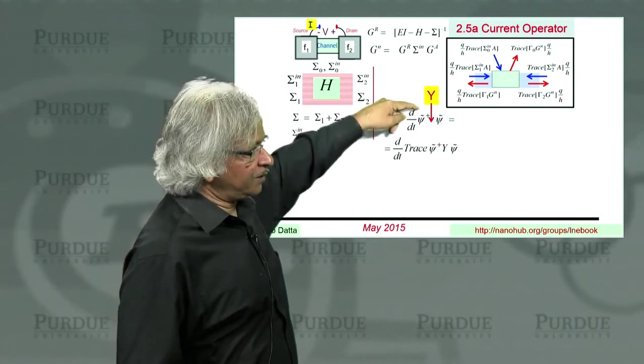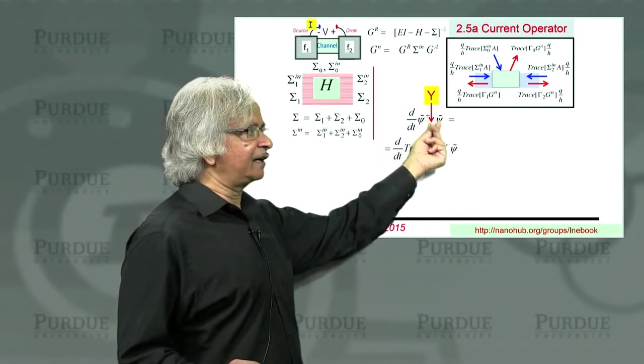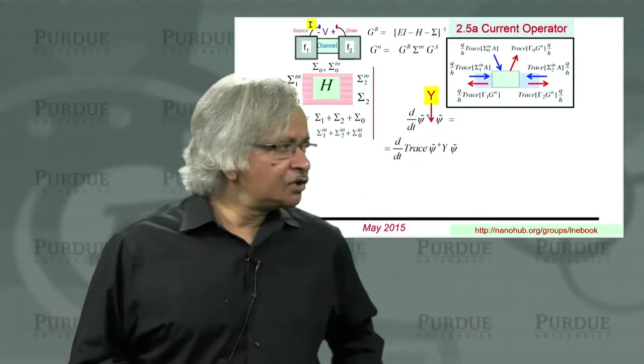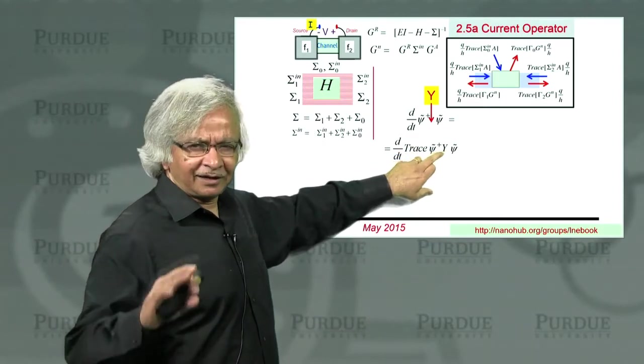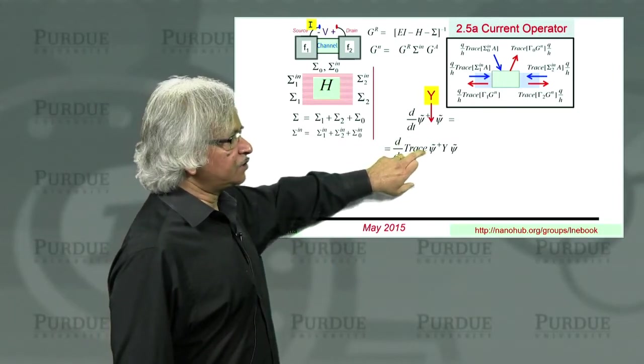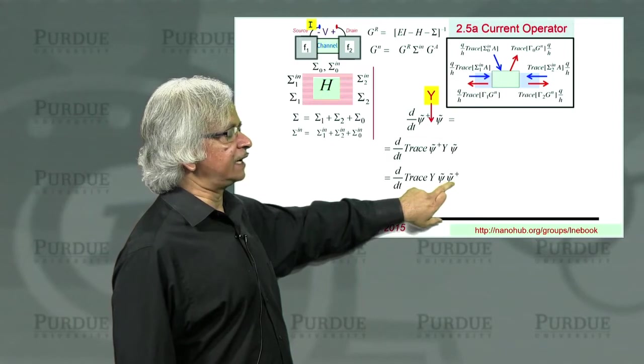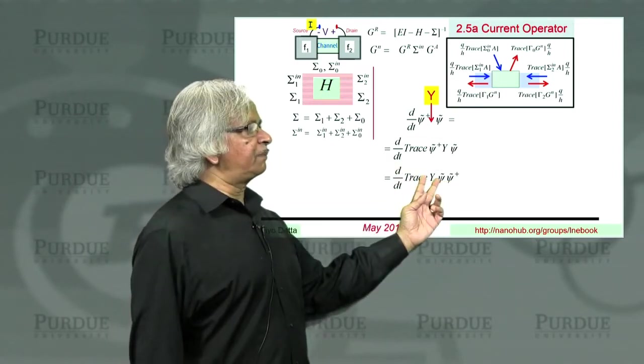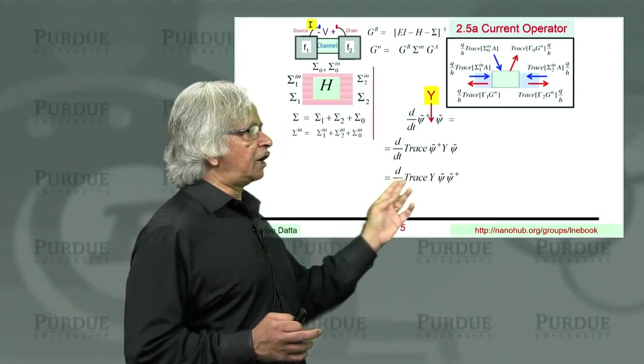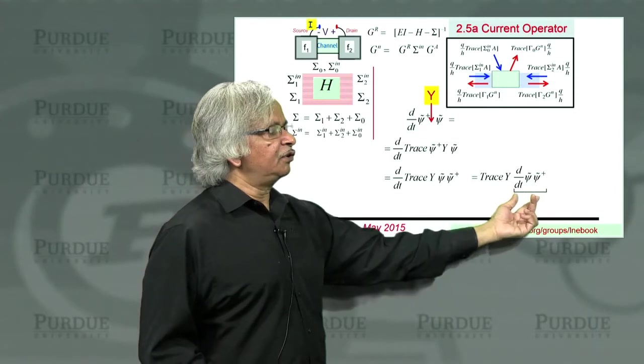Now, we can proceed from here by noting that this quantity is just a number, as we discussed before. Psi dagger, any matrix in between psi and psi, overall, it's a one-by-one quantity, which is just a number. So you could write it as the trace of that number. Kind of looks silly, but you know why I'm doing it. We went through this once before. So you put a trace there. And once you have trace, you can move things around. So you can take the psi dagger from here and put it at the end. So you have trace of Y psi psi dagger. Now, let's assume that this property Y that we're interested in has nothing to do with time. So it can be pulled out of the d/dt. So you could write it in this way, trace Y d/dt of psi psi dagger. So if you look at that quantity, this is what we could use to deduce a general current operator I_op.